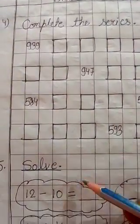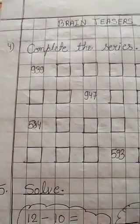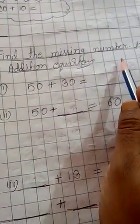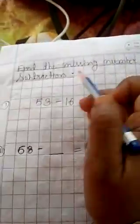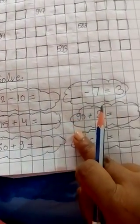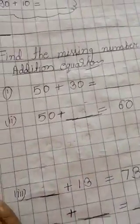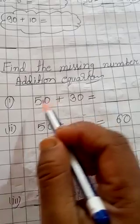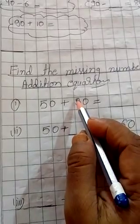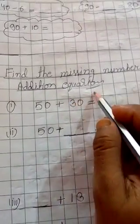Question four is 'complete the series' and question five is to be solved. But before we solve these two brain teaser questions, I want to explain how to find out the missing number in an addition equation and in a subtraction equation, because after understanding this you all can solve question five easily.